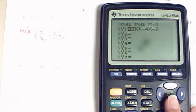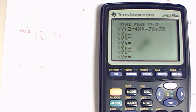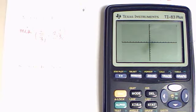The last example we looked at was negative 4x squared minus 7x plus 3. We plug that into our calculator, and then we graph it.